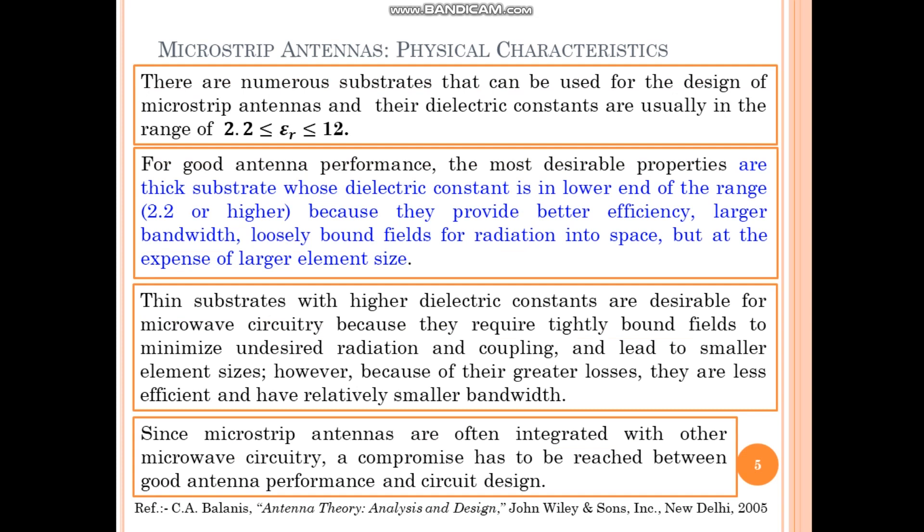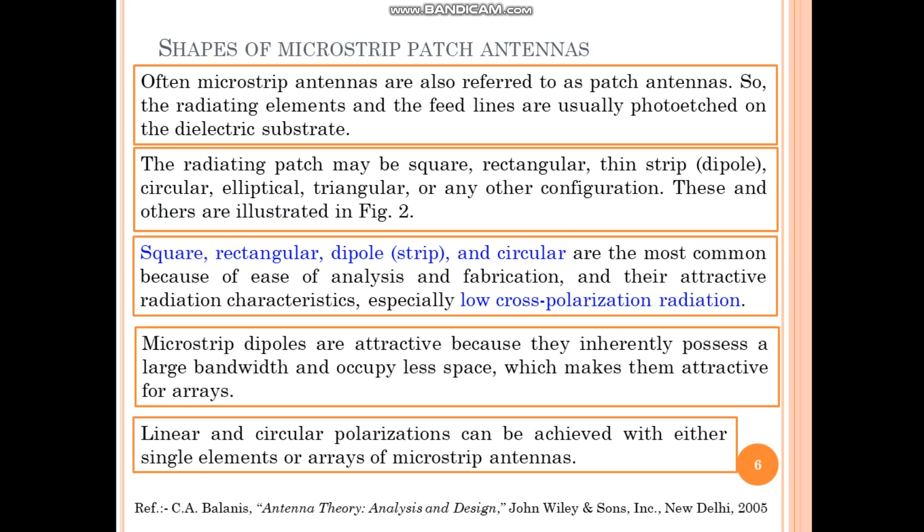When Microstrip Antennas are integrated with microwave circuitry, a compromise has to be reached between good antenna performance and circuit design. Microstrip Antennas are also called patch antennas, and the radiating element and the feed lines are usually photo-etched on the dielectric substrate. The radiating patch can be used in different shapes like square, rectangular, dipole, circular, elliptical, triangular, disc sector, circular ring, and ring sectors, as illustrated in figure 2.